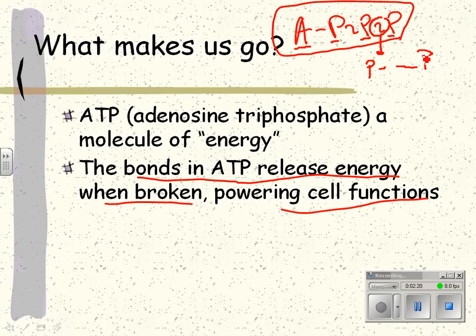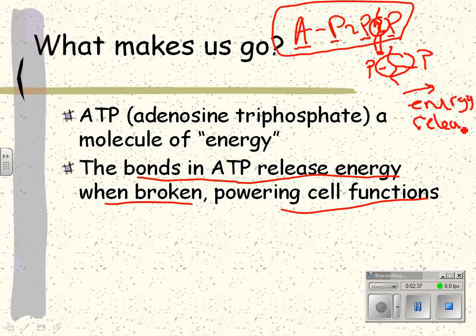Those phosphate molecules naturally repel each other, but because the cell provides a chemical bond, they're bonded together. So if we break this bond, energy is released. And we're going to go over this again in a minute. There's an energy release, and that energy is used to power the cell.